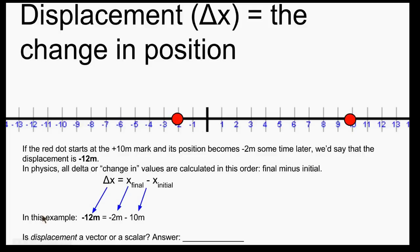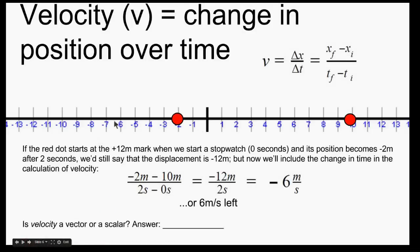Is displacement a vector or a scalar? It's a vector because direction is important. Velocity is calculated by taking the change in position over a certain amount of time. The equation is: final position minus initial position divided by final time minus initial time. Using our example, the initial position was 10 meters, the final position was negative 2 meters. Our final time was 2 seconds and initial time was 0 seconds, giving us negative 12 meters divided by 2 seconds, or negative 6 meters per second.